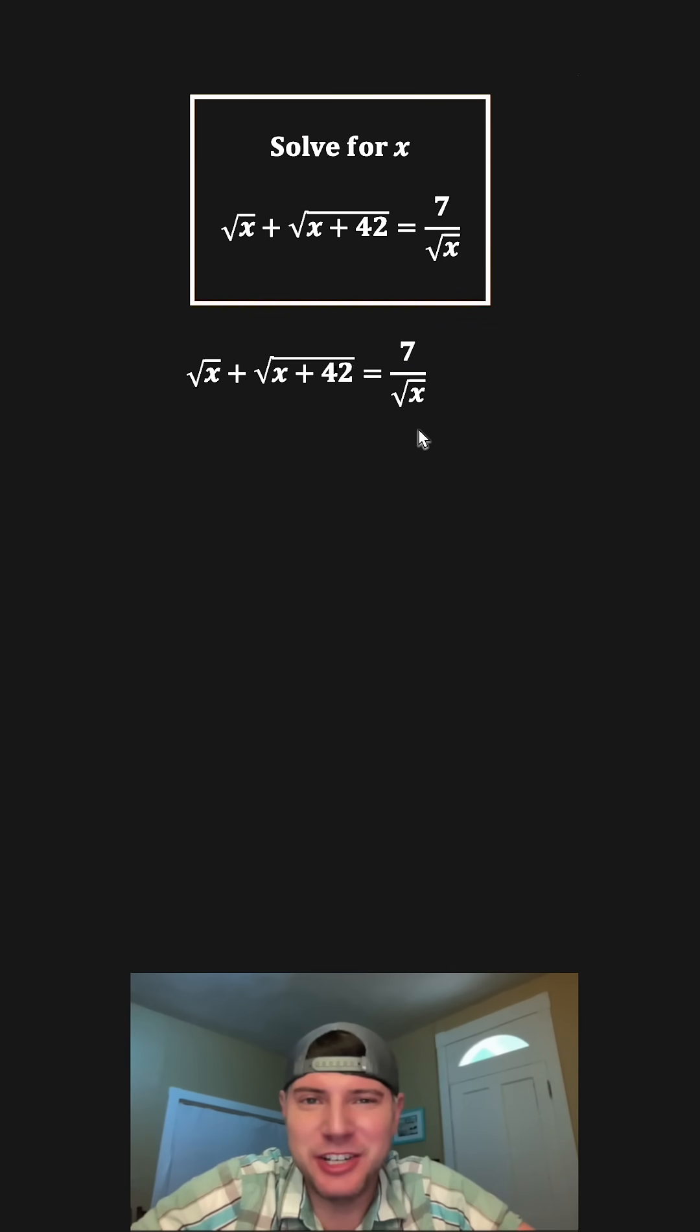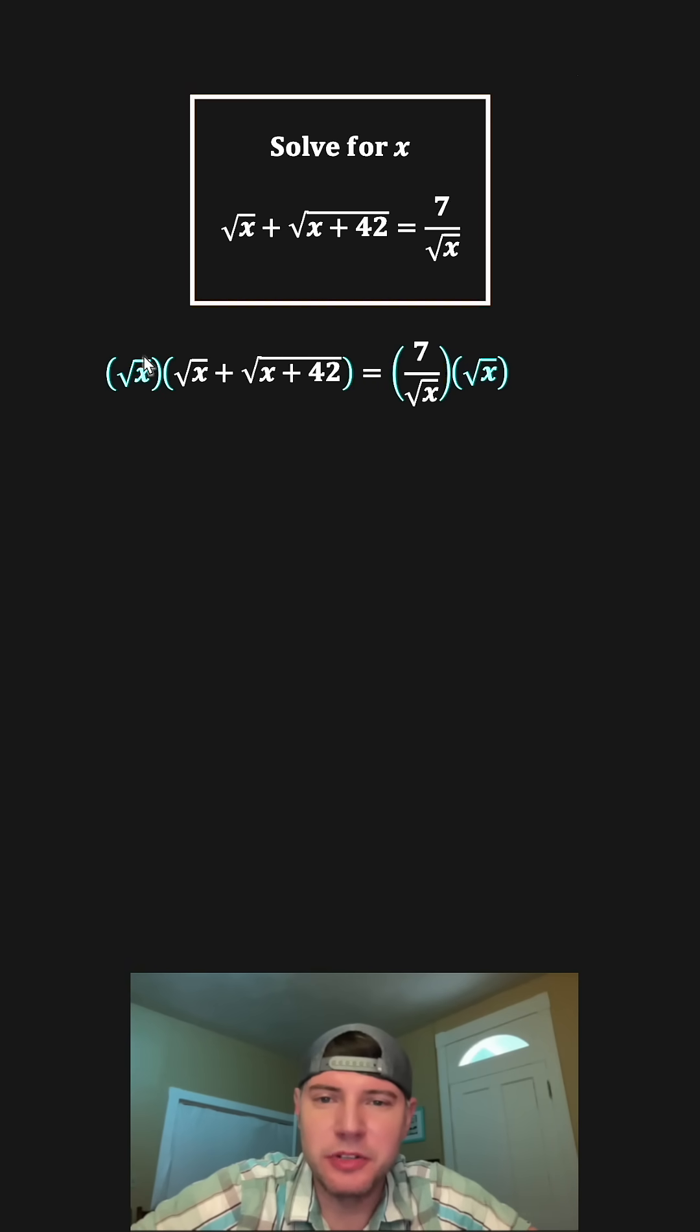First, I don't really like fractions, so to get rid of this denominator, let's multiply both sides of the equation by square root of x. On the left-hand side, this will distribute to both of these terms. We'll have root x times root x, which is equal to x, and root x times root of this is equal to root x root of this. And then on the right-hand side, these two root x's will cancel each other out, leaving us with 7.